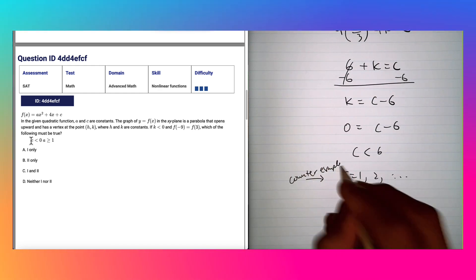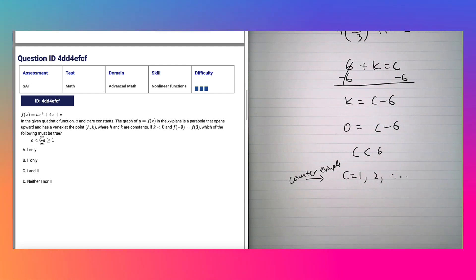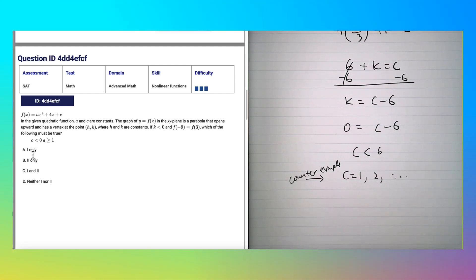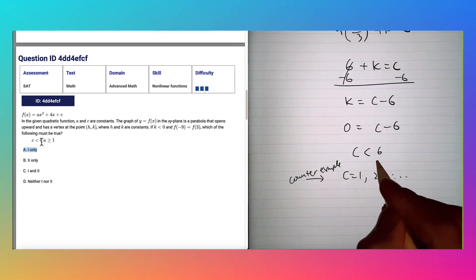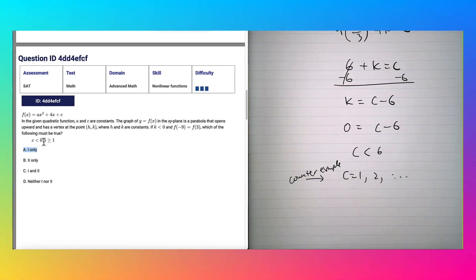It's the example that it doesn't necessarily be that c is less than zero. If c was less than 6, yes, one would be the correct answer. But it says c is less than zero, so it doesn't match. Therefore the answer is D, neither one nor two.